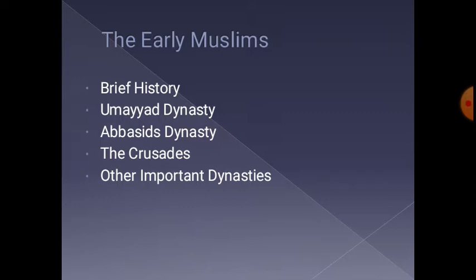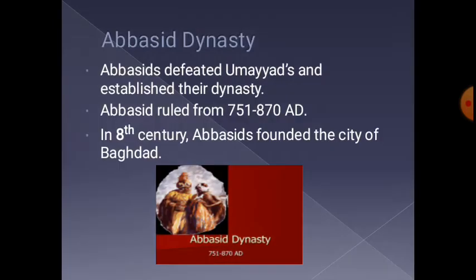Abbasid dynasty: The Abbasids defeated the Umayyads and established their dynasty. The Abbasids ruled from 751 to 870 AD in the 8th century.